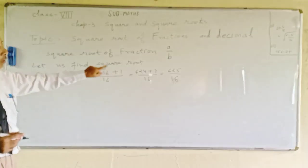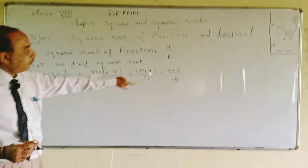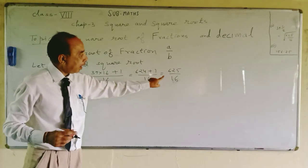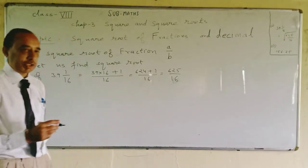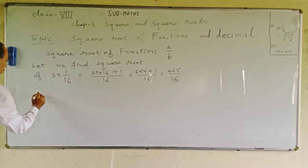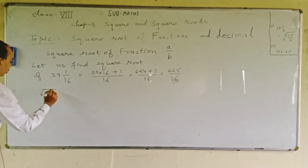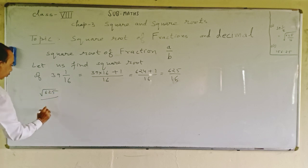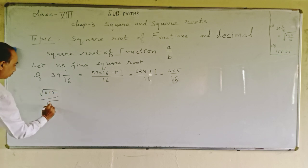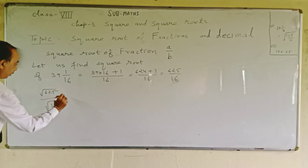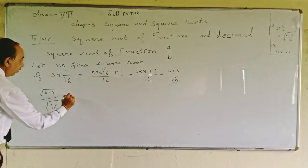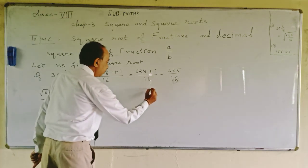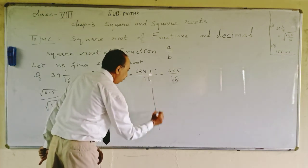Now our fraction is in the form of A upon B. We will find the square root of the numerator and denominator separately — the square root of 625 separately, and the square root of 16 separately.